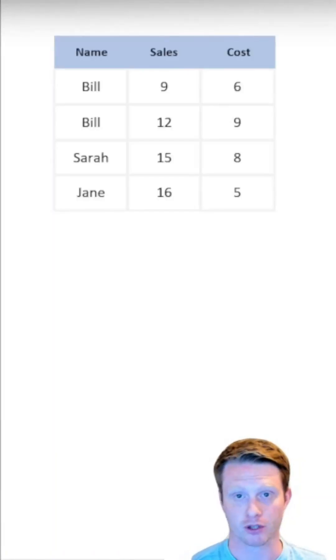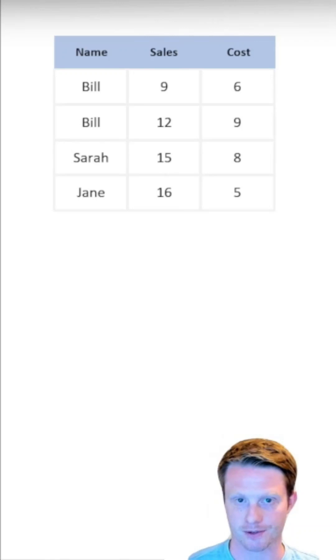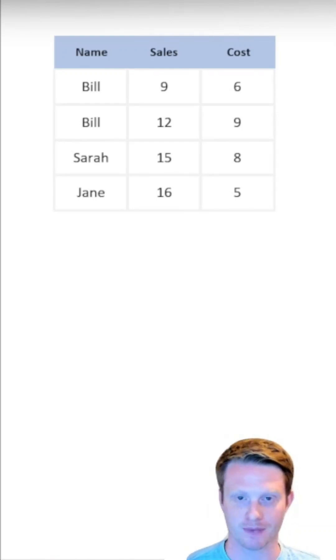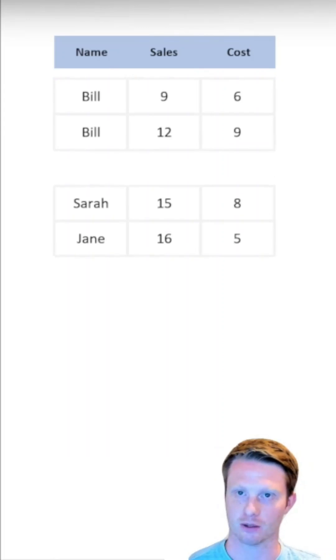Parquet is essentially a columnar stored file. However, there's one extra little thing it does. Instead of just storing every bit of information in one huge file, it splits it out into what they call row groups.